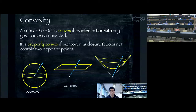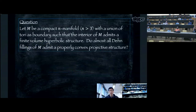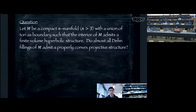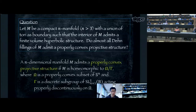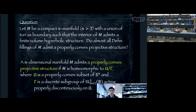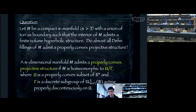The main question is: let M be a compact n-manifold with boundary a union of tori, such that the interior of M admits a finite volume hyperbolic structure. Does almost all Dehn fillings of M admit a properly convex projective structure? A manifold M admits a properly convex projective structure if M is homeomorphic to Ω/Γ, where Ω is a properly convex subset of the projective sphere and Γ is a discrete subgroup of SL±(n+1, ℝ) acting properly discontinuously on Ω.